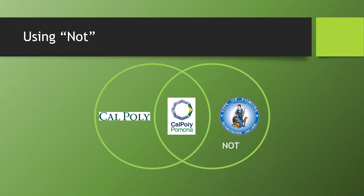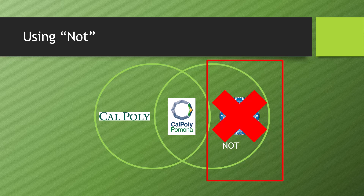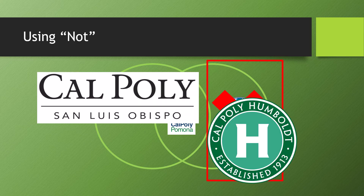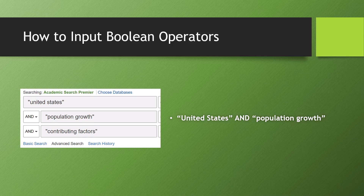The last Boolean operator is NOT. We don't tend to use NOT as often as AND or OR, because it is a very specific tool. Generally, you use NOT to eliminate results that pop up when two search terms often go together and you only want one of them. For example, 'Cal Poly NOT Pomona' ensures you'll only get results dealing with Cal Poly SLO and Cal Poly Humboldt. There are two basic ways to use Boolean operators: placing keywords in separate search boxes and selecting a Boolean operator from drop-down menus, or typing the operators between search terms in all caps when drop-down menus aren't available.